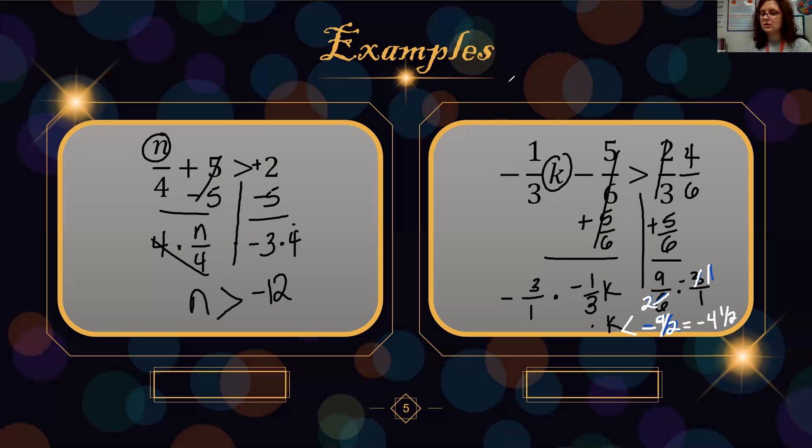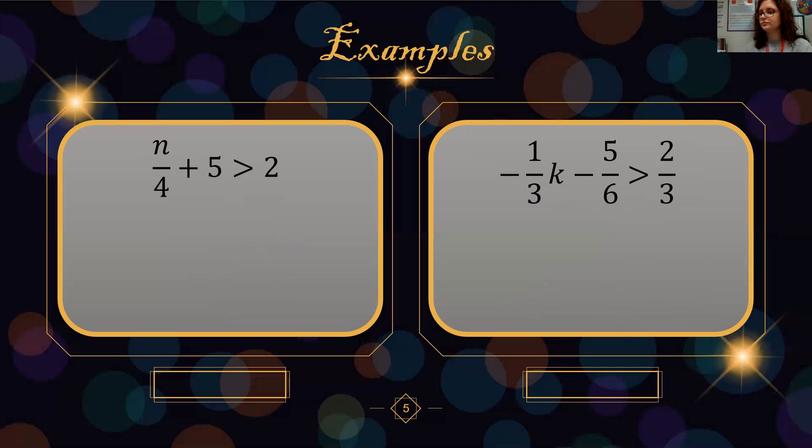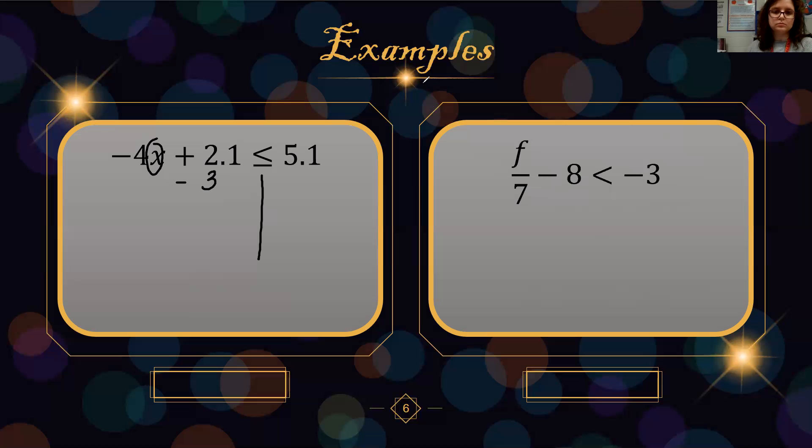Let's look at our last two examples. So we're going to split the sides, circle our variable. We undo addition with subtraction. 5.1 minus 2.1 is 3.